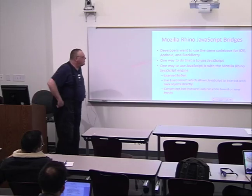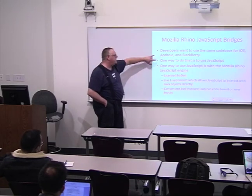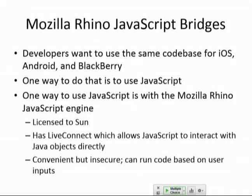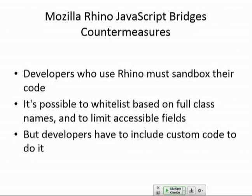Mozilla wrote something called the Rhino JavaScript Bridge — another way to do the same thing. You write everything in JavaScript, and then it can interact with your Java objects directly, so you can do anything you want. These all repeat the same kinds of mistakes Microsoft made with ActiveX — a way to have compiled code run in Internet Explorer that could do anything: run Windows Update, write the file system, format the drive, send emails. That turned out to be a pretty poor feature to build into a browser. Rhino is convenient but insecure. If you use it, you have to sandbox your code and whitelist inputs to limit which functions are permitted — but that's not easy, and that means people probably won't do it.